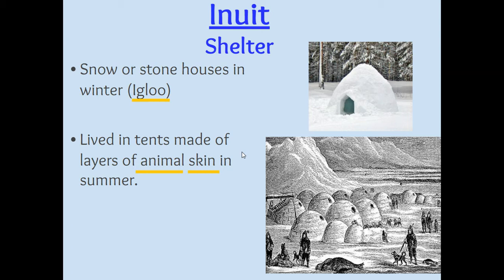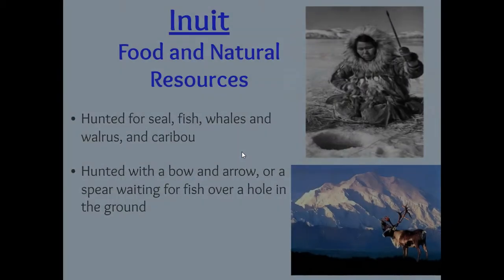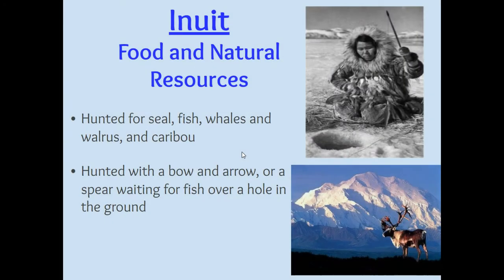Sometimes when they have access to animals, they'll make tents made out of animal skin, like in the summer. But usually they're going to be living in those igloos made of snow and ice. Their food and natural resources consist of seal, fish, whales, walrus, and caribou. These are all animals that they can hunt using capital resources like bows and arrows or spears. When they go fishing, they go what we would consider ice fishing, where they have a spear over a hole in the ice and they're waiting for fish to go by so that they can hunt that fish.